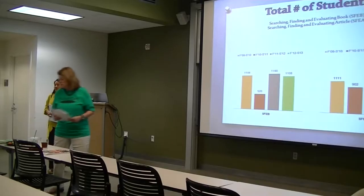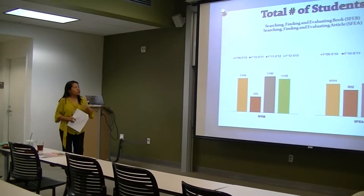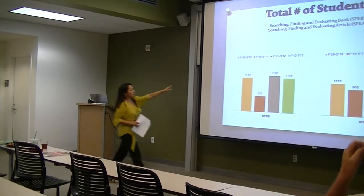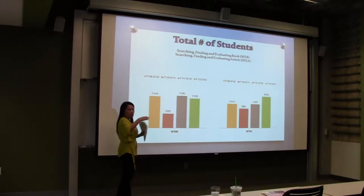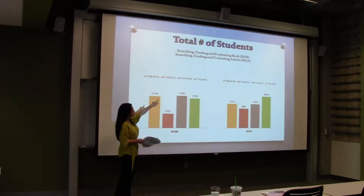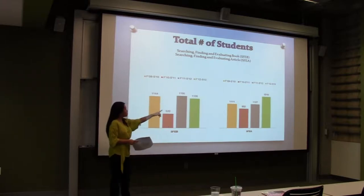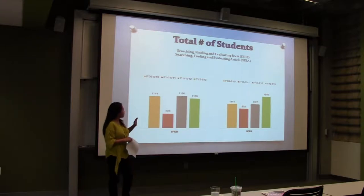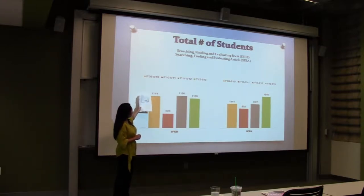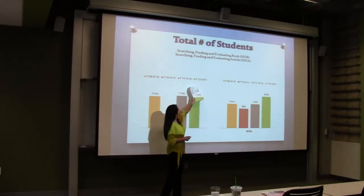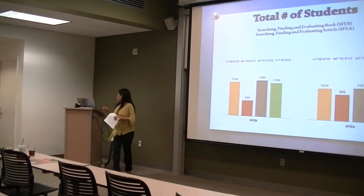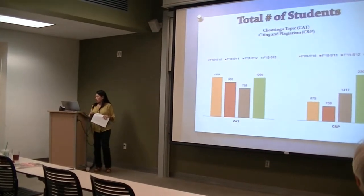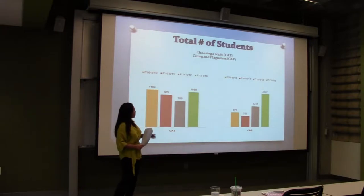I'm going to give you some statistics on student usage numbers. These cover fall 2009 to spring 2010 — a full academic year — for the book and article modules, showing how many students took them each year and in the last semester. The choosing a topic and citing and plagiarism modules follow the same pattern, showing the year and total number of students who completed them.